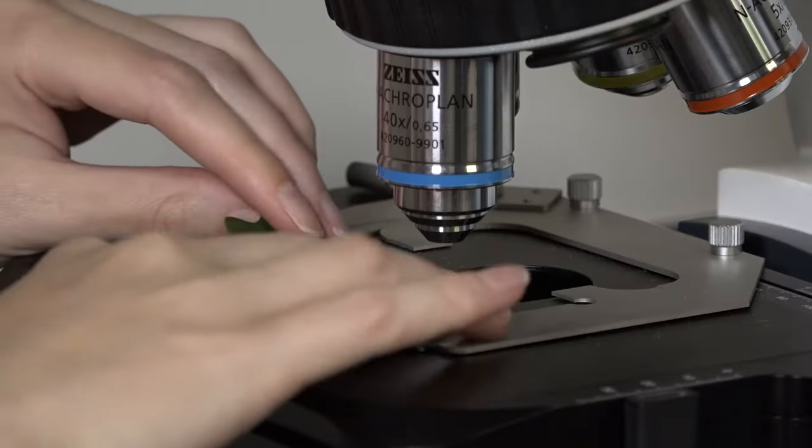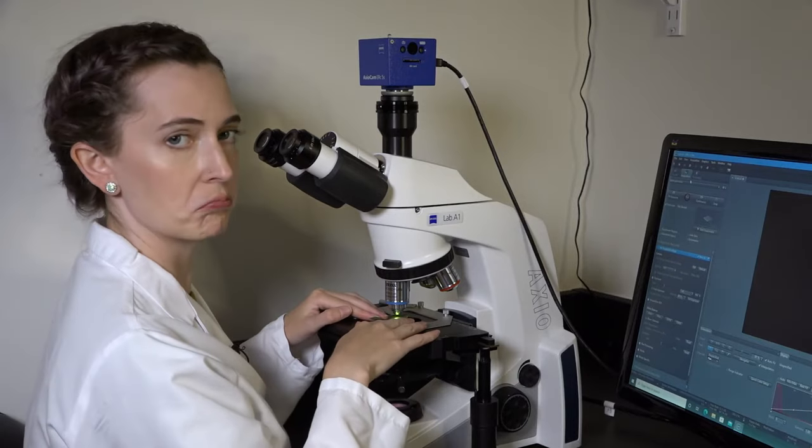In this video, we'll be doing a stomata peel, which is a technique for visualizing all of these teeny tiny mouths. We can't see them if we just stick a leaf under a microscope. We have to do a few extra steps.